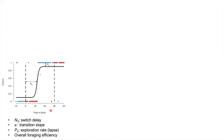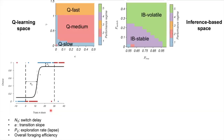Together with the overall foraging efficiency, this gives us four features that can be used to classify the behavior of agents. Across all agents, we found five distinctive regimes of behavior: three regimes in the Q-learning mode corresponding to a model-free strategy with slow, medium, or fast learning rates, and two regimes in the inference-based space corresponding to an internal belief of a stable or volatile environment.